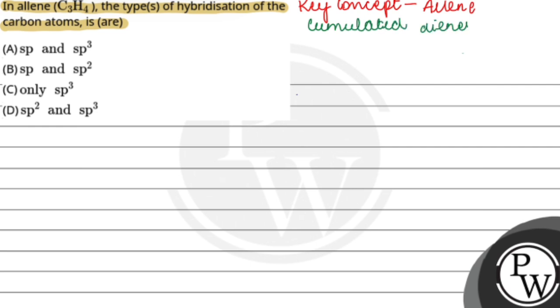This question is about C3H4. Let's discuss the structure. The structure is CH2 double bond C double bond CH2. So its IUPAC name is 1,2 propadiene.